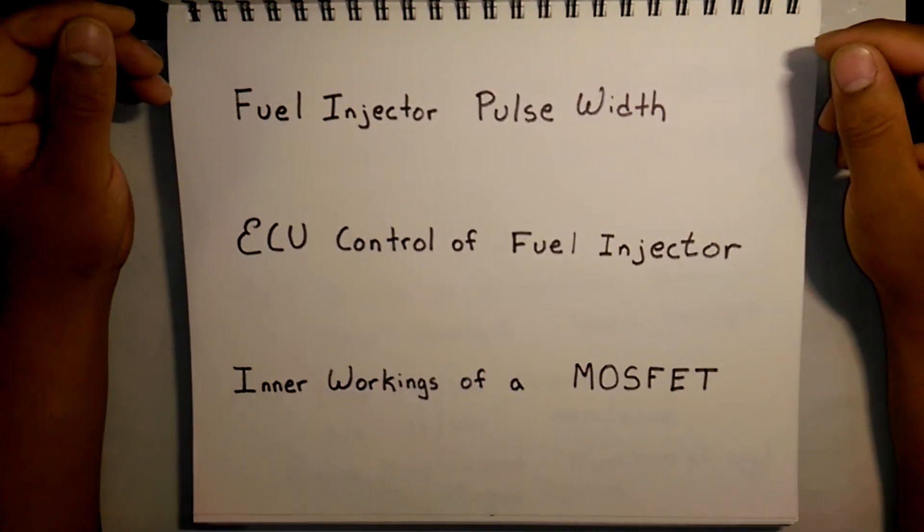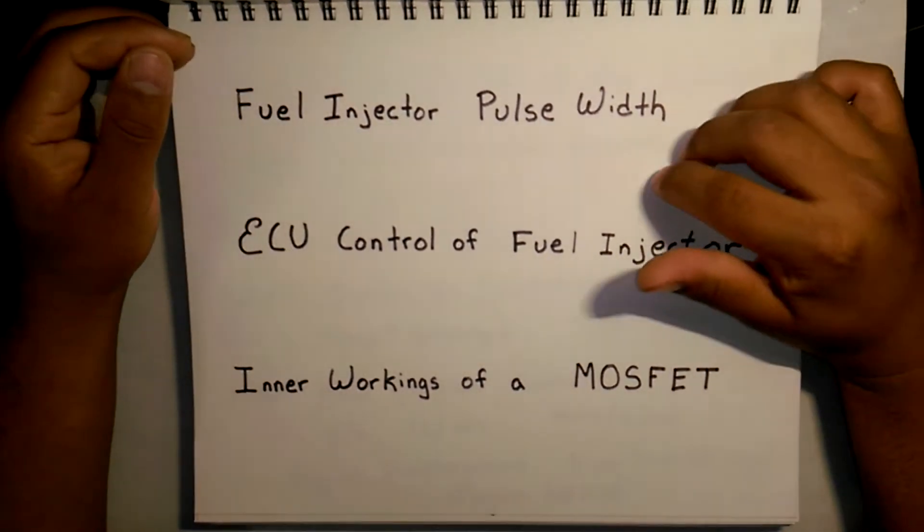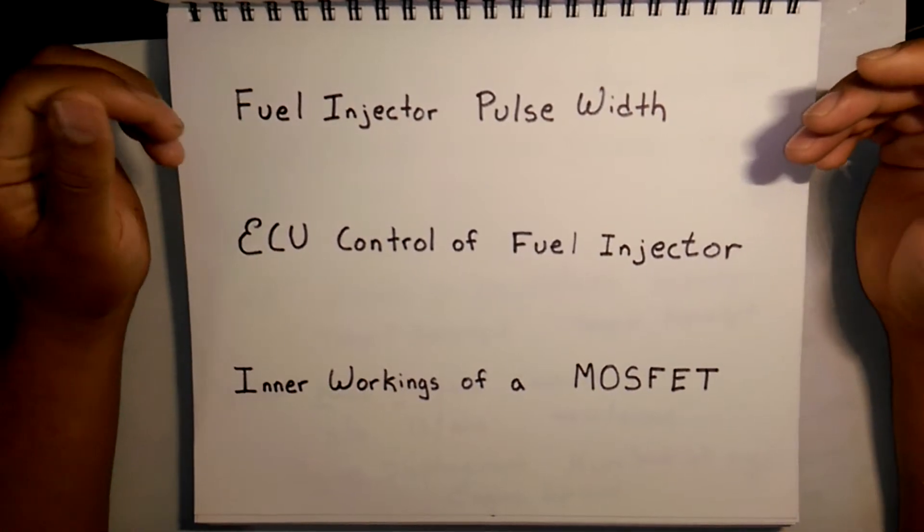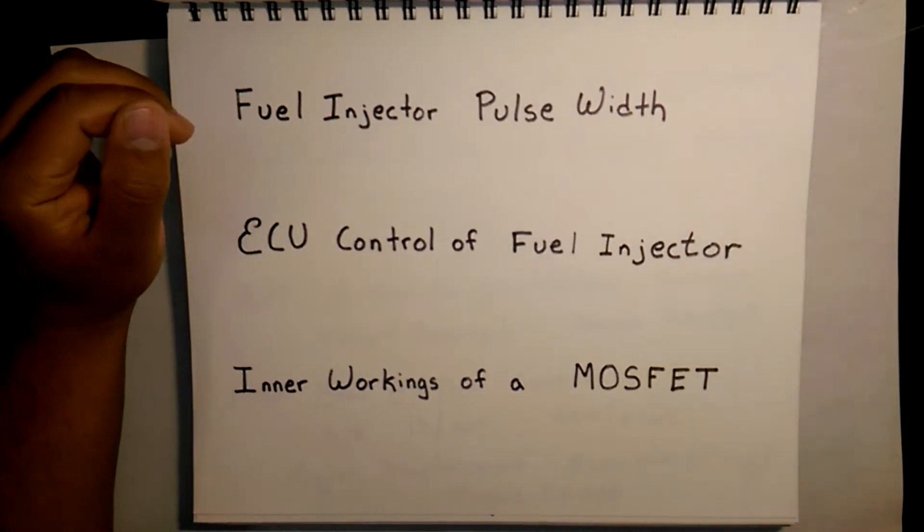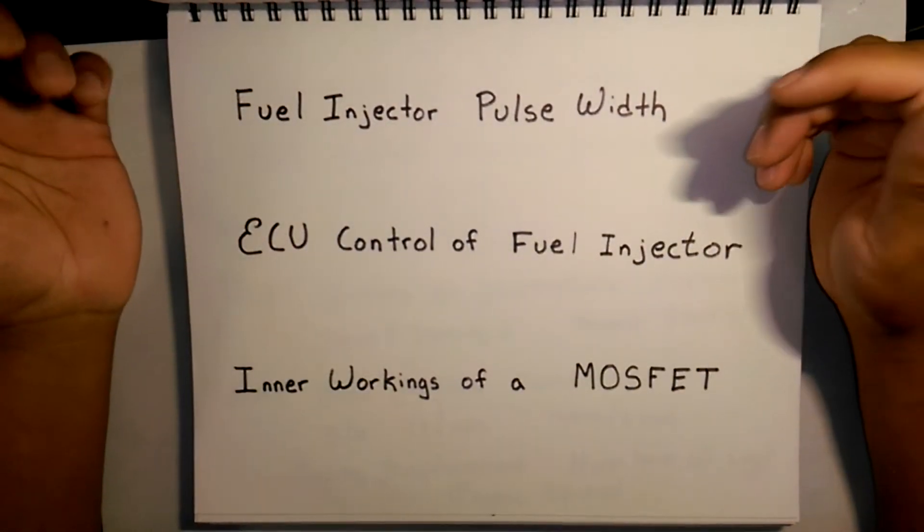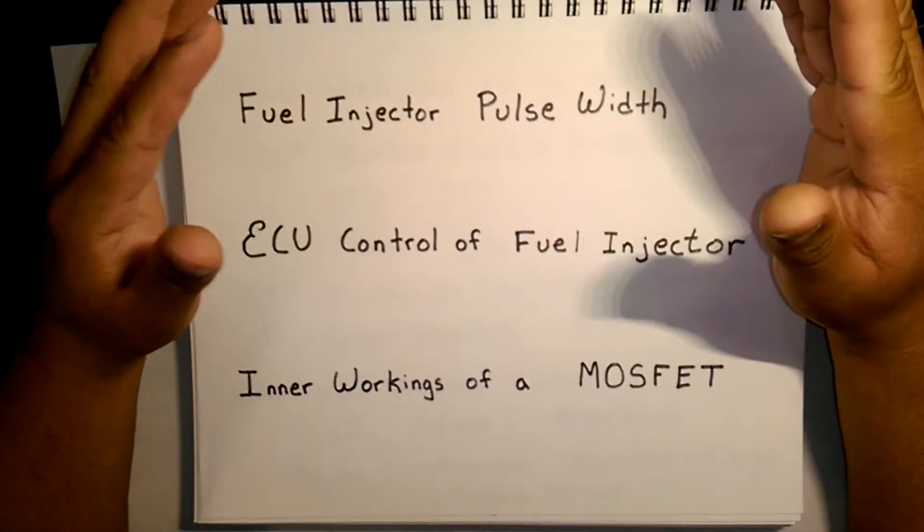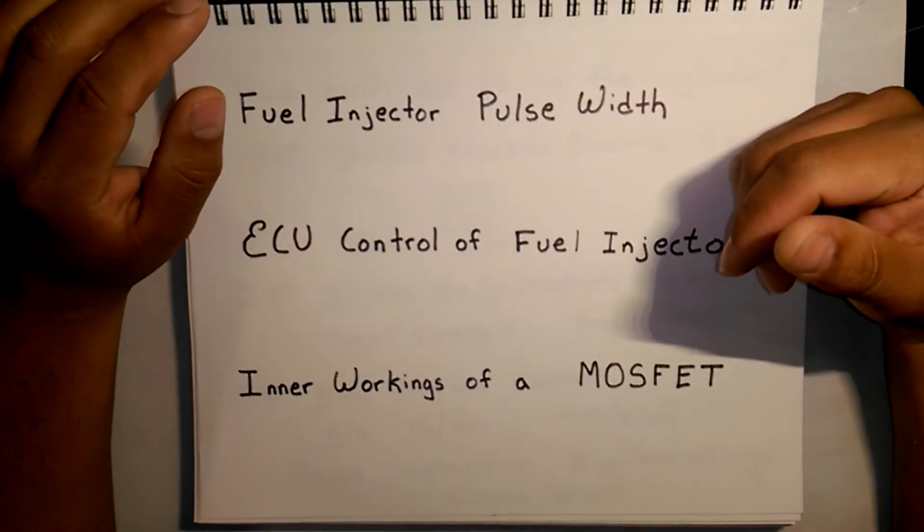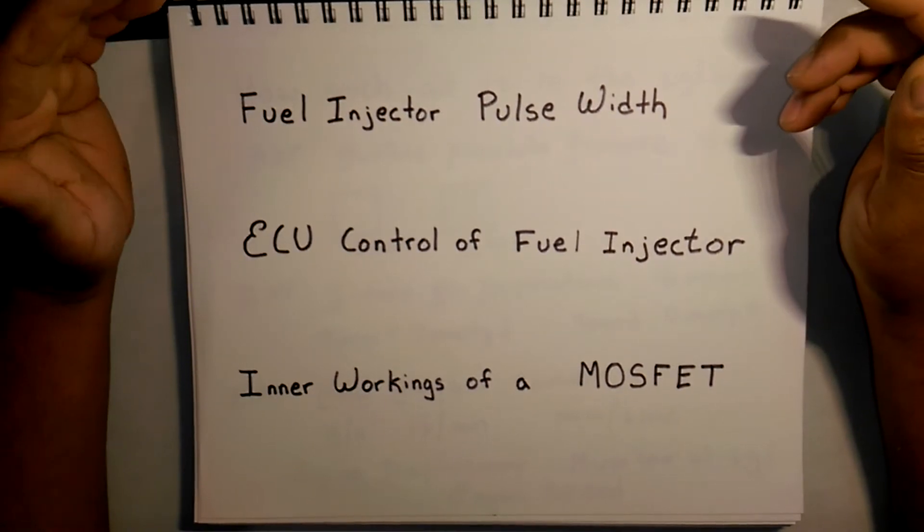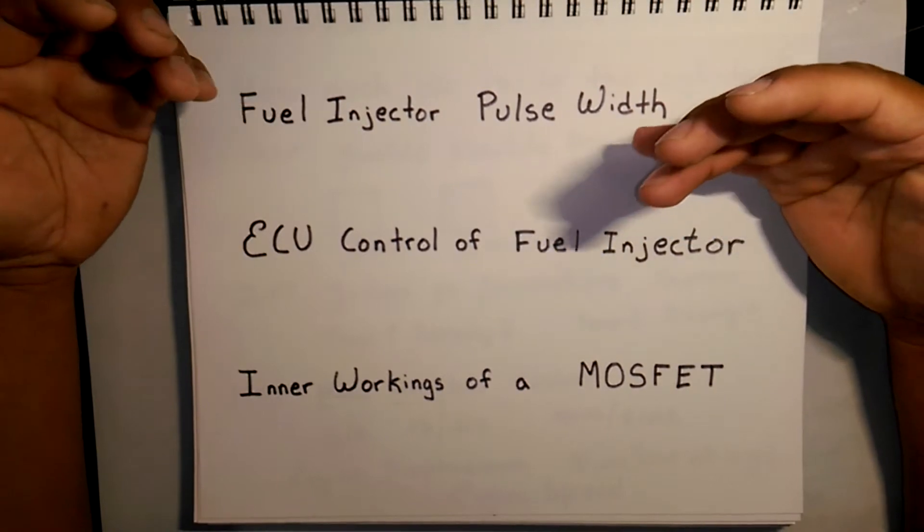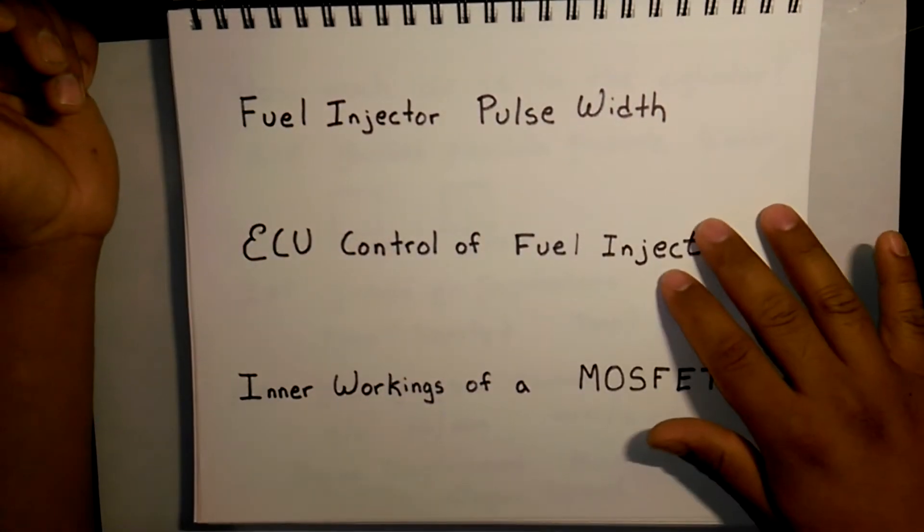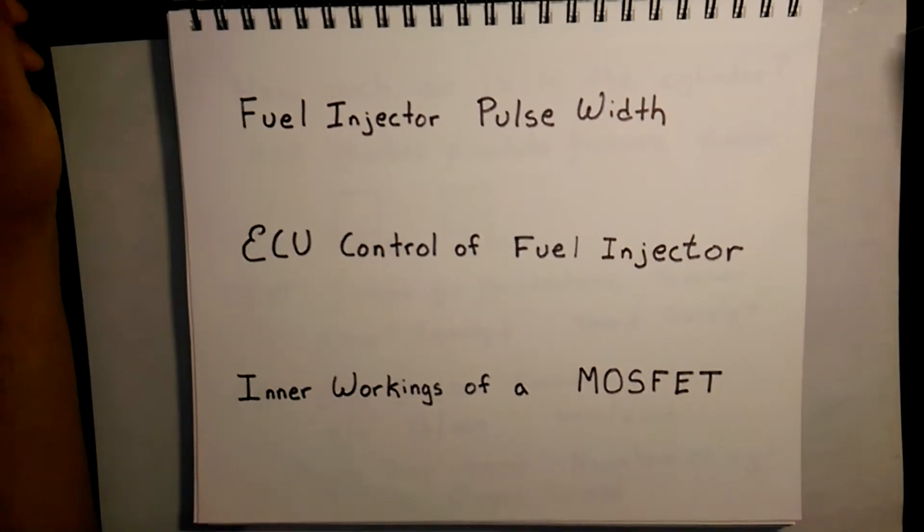So in today's video, it's actually a three-part video. I noticed in the comments of my last video about the analysis of the fuel injector waveform and why there is an inductive spike, some people said that they wanted to know more about the MOSFET and the control of the fuel injector. I started making that video and realized there's a lot more that I wanted to talk about in that context. So I started to break it up into three separate videos. I'm going to be uploading them all at the same time. The first one is going to be fuel injector pulse width and how the computer calculates the pulse width. Second is the actual physical ECU control of the fuel injector. And then the inner workings of a MOSFET. So this video is the fuel injector pulse width video. Let's get started.